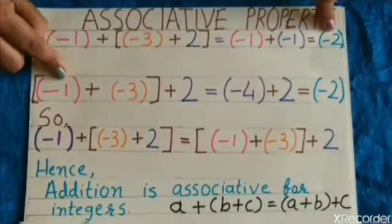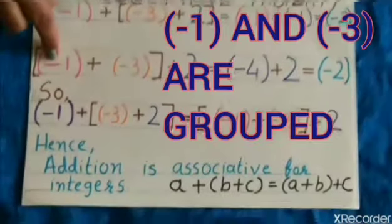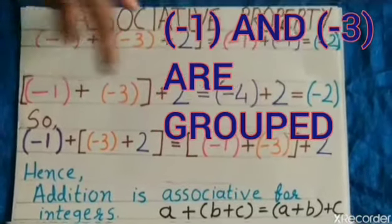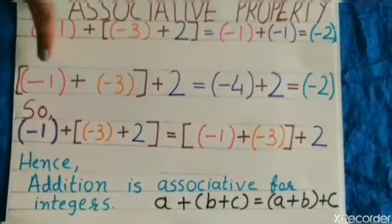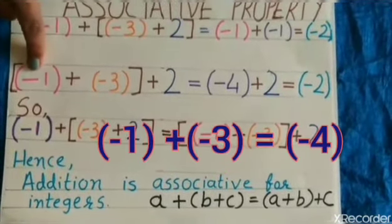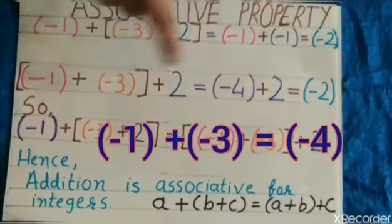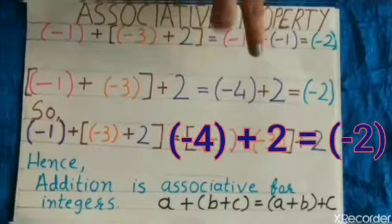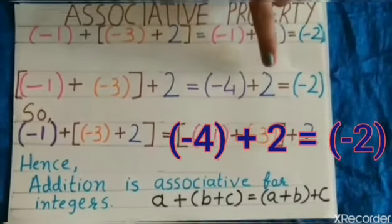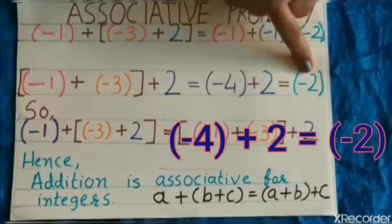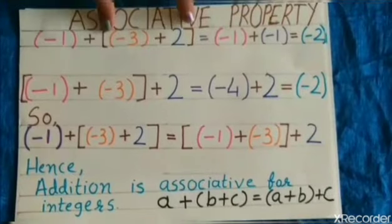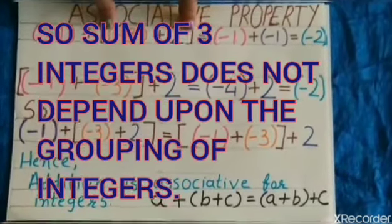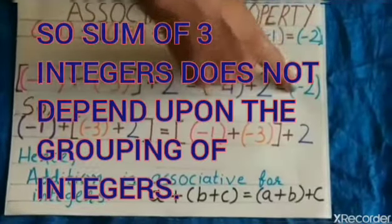Now, see here. Here, minus 1 and minus 3 are grouped. And 2 is as it is. So, first, addition of minus 1 and minus 3, answer is minus 4. Now, addition of minus 4 plus 2, answer is minus 2. So, if we will change the grouping of numbers or integers, but answer is same.